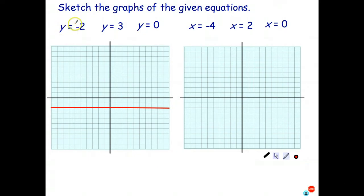Anytime you have y equals some number, in fact, the general equation is of the form y equals c. And c is just the y-intercept. So if it has that form, it's going to be a horizontal line.